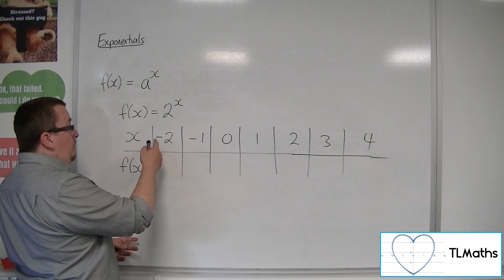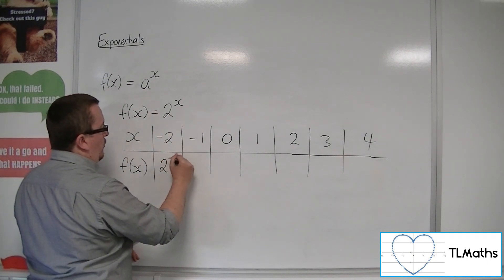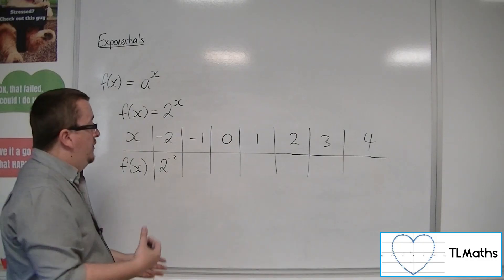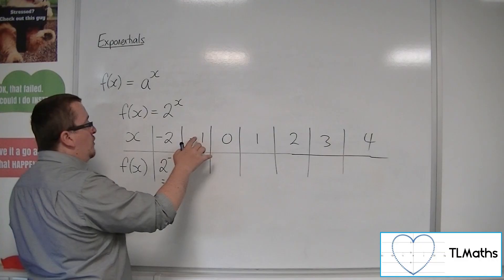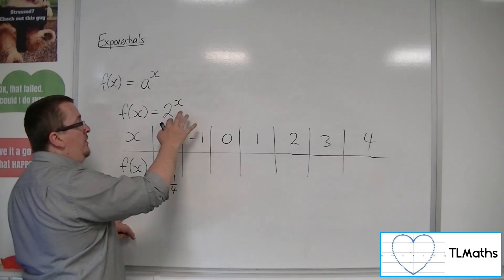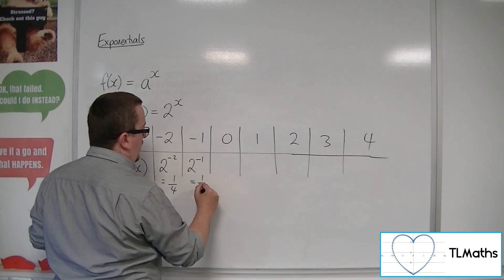So then when x is minus 2, you have 2 to the power of minus 2. 2 to the power of minus 2 is a quarter. And then when you've got x to be minus 1, you've got 2 to the power of minus 1, which is a half.